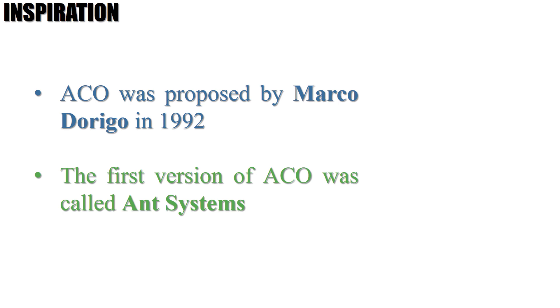The ant colony optimization algorithm was proposed by an Italian scientist named Marco Dorigo as part of his PhD in 1992. In fact, the first ant-inspired algorithm was called ant systems, but these days we use an improved version of this algorithm which is now called ant colony optimization, or in short form, ACO.